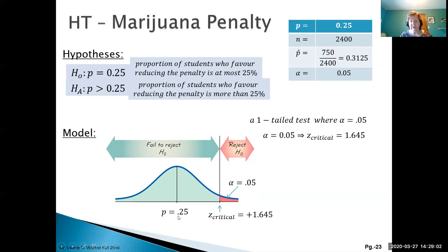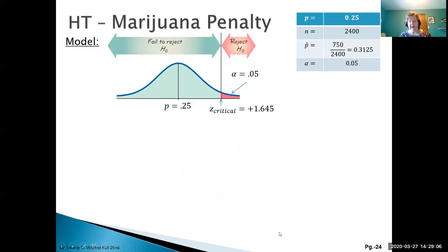There's our alpha region shown, 5%. There's our Z critical, positive 1.645, and there's our population proportion, 25%. Now moving on to our mechanics or calculation phase.